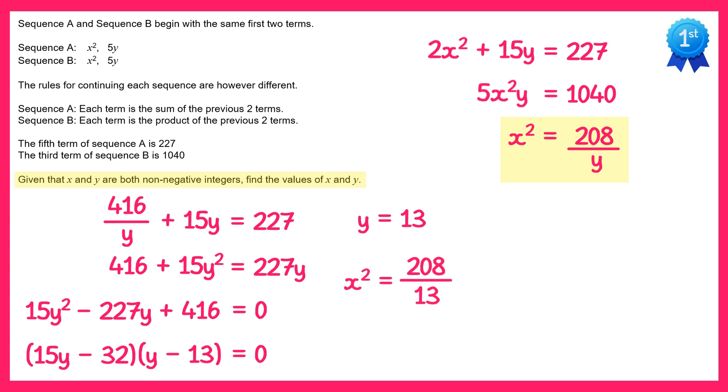Now 208 does divide by 13, that's 16, so we've got x squared equals 16. And if you square root both sides you'll get two solutions for x, we'll get plus 4 and negative 4, but again we don't want the negative solution so it's just plus 4.